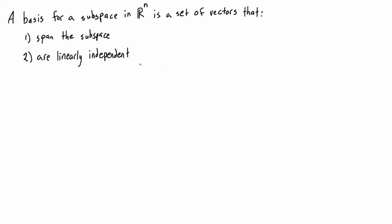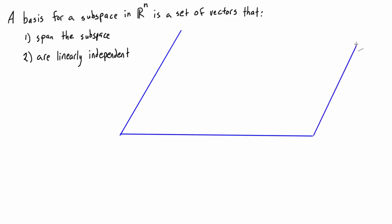This works in any number of dimensions. So if we have a basis for a subspace with n dimensions, then we're going to have n vectors in that basis, no more and no less. So let's draw a plane here. If we wanted to describe this plane with a set of vectors, we would only need two linearly independent vectors. We could have a linear combination of these two vectors to create any other vector in the span of these two, because these two vectors span the entire subspace, which is this plane.